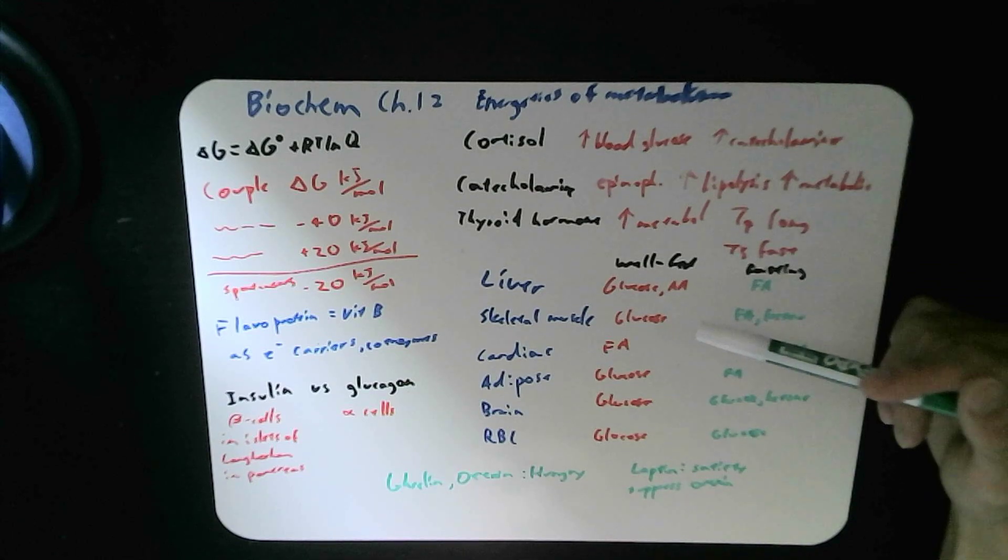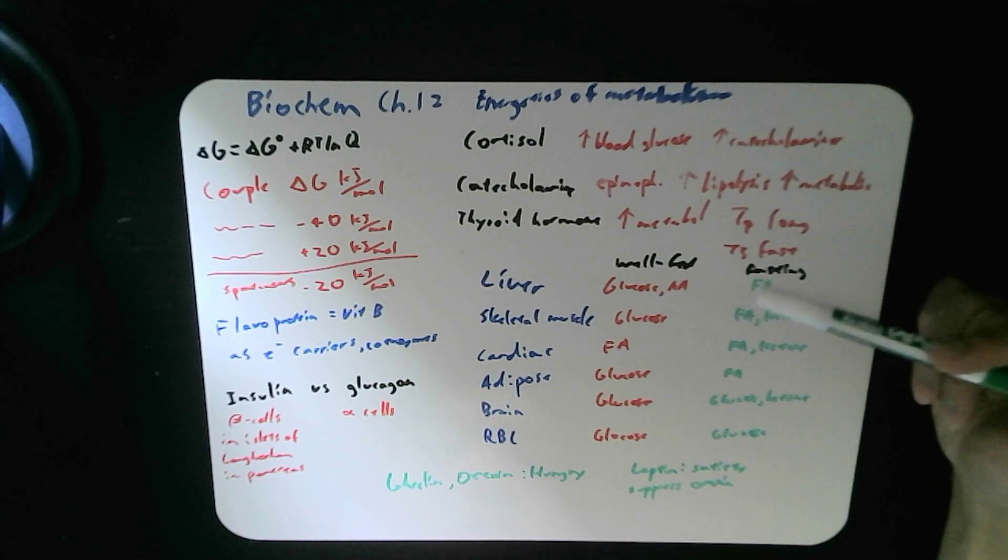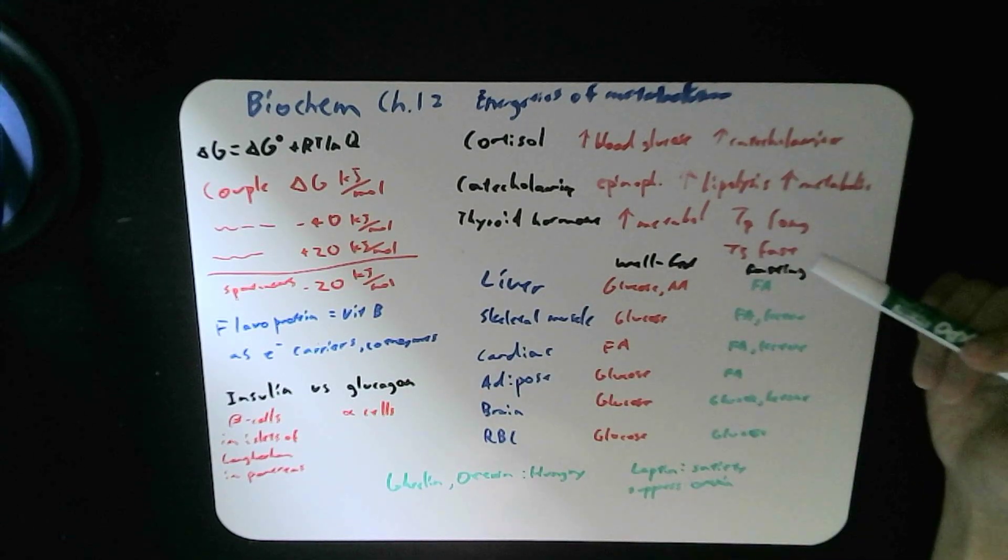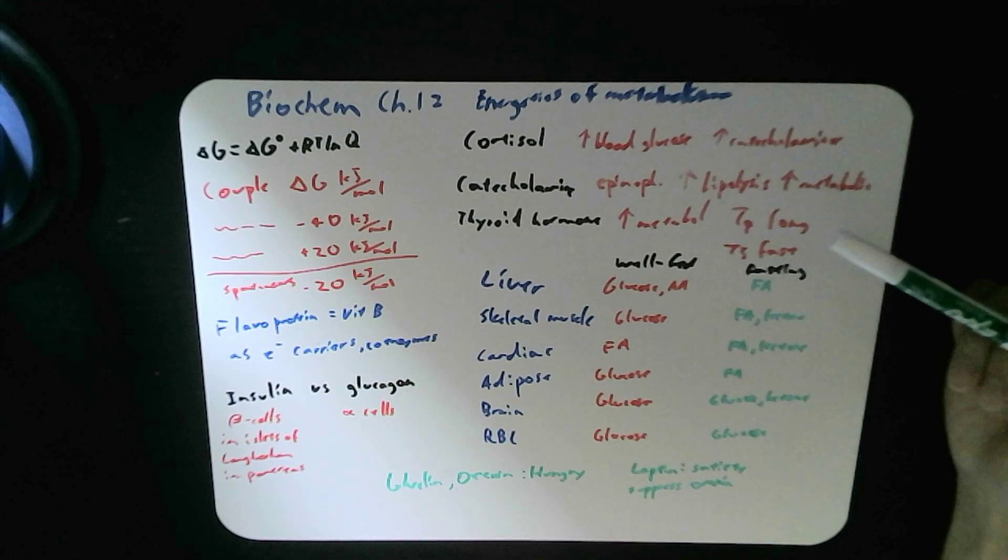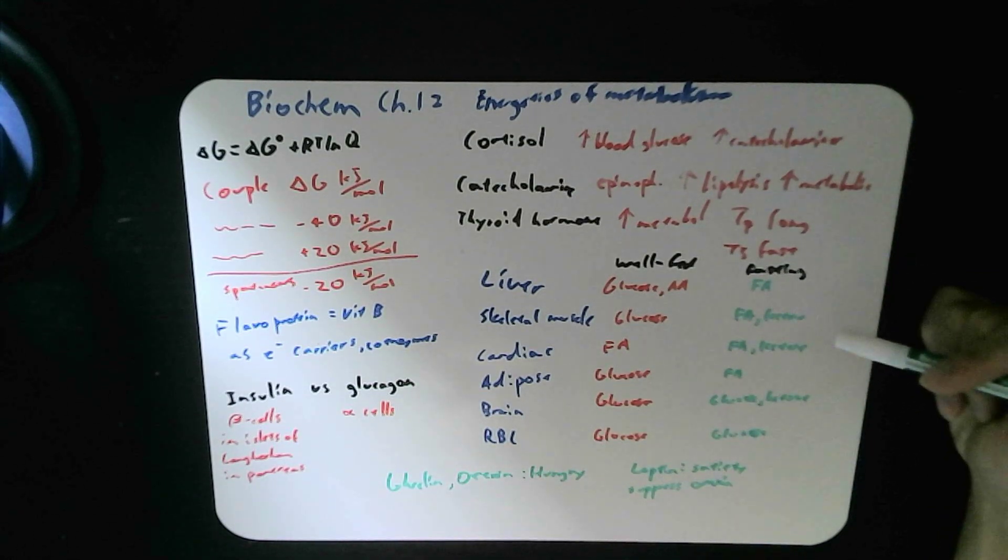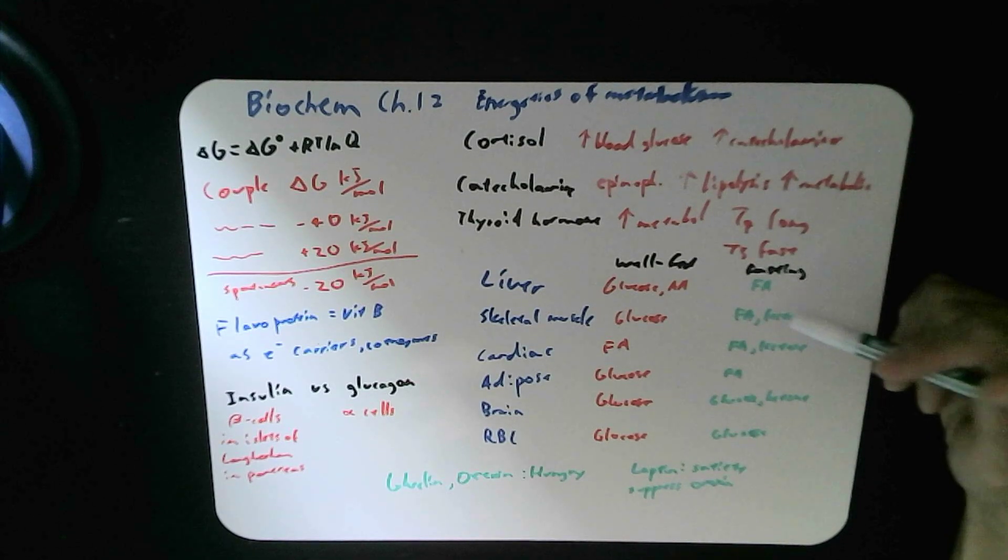Your skeletal muscles use glucose mostly, but can also use fatty acids and lactate when in the fasting state. Your cardiac muscle uses fatty acids either in well-fed state or fasting state, and also uses ketones.